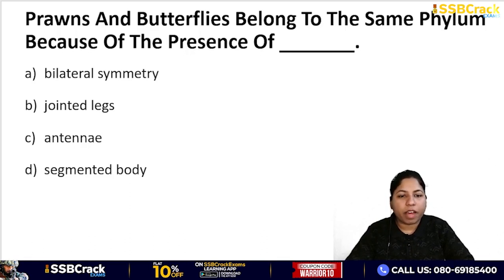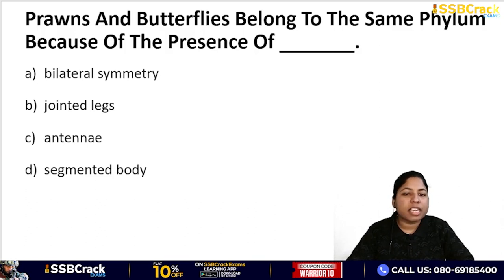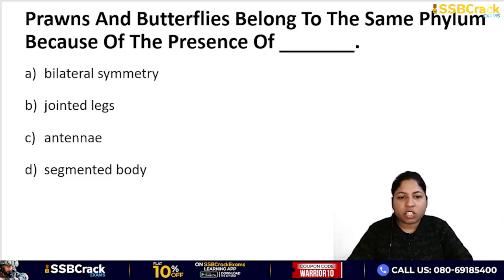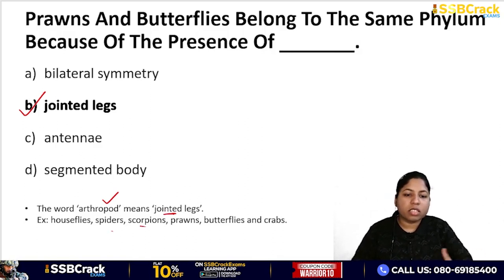Next question: prawns and butterflies belong to the same phylum because of the presence of — bilateral symmetry, jointed legs, antennae, or segmented body? The correct answer is jointed legs. 'Arthropoda' itself means jointed legs, and that is why prawns, butterflies, scorpions, spiders, houseflies, and crabs are all placed in this phylum.